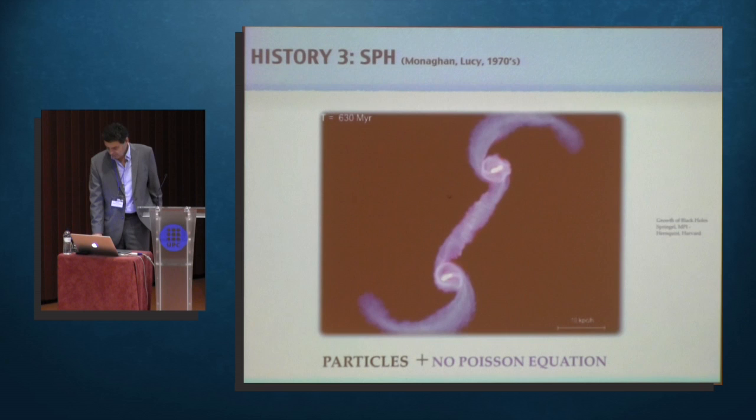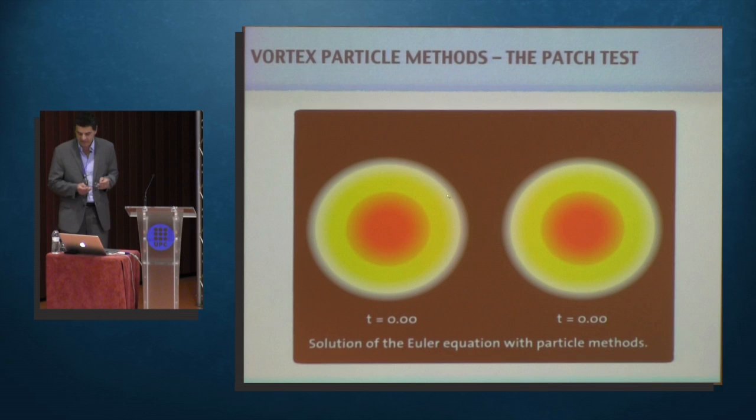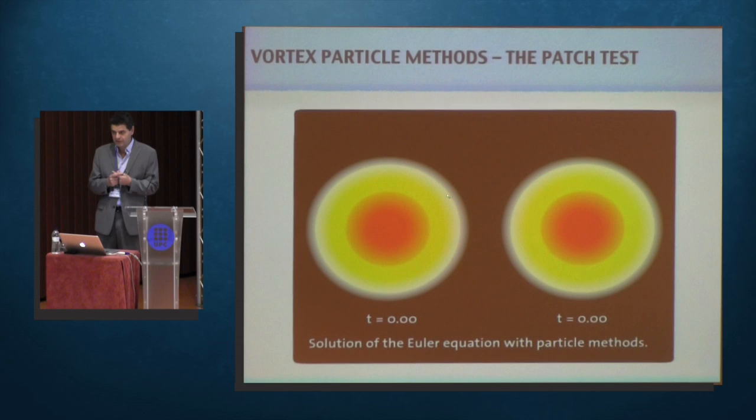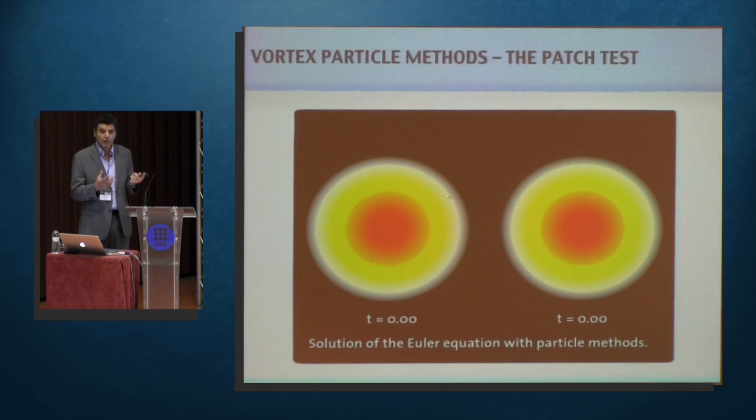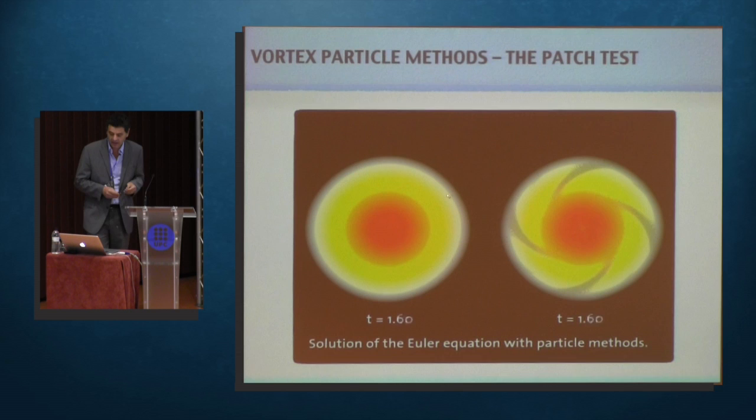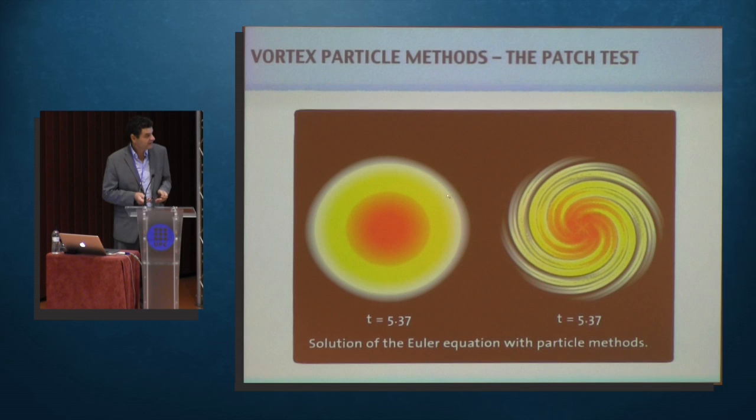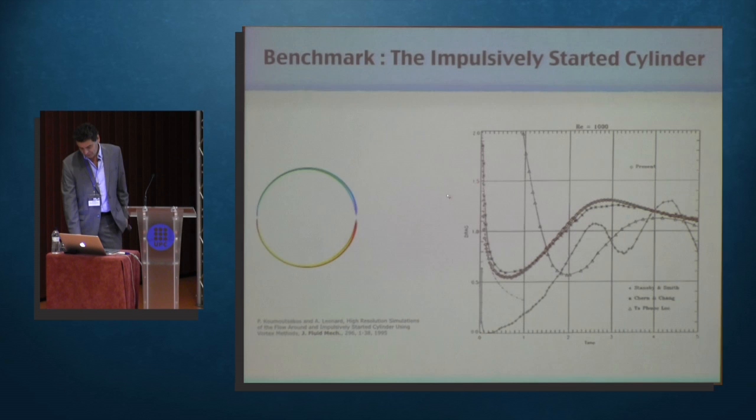You can do some simple tests to show that. Here's the simple test, which is a circular patch of vorticity. This is a solution of the Euler equations. What's nice about that is that it's an exact solution of the Euler equations. It's a very boring solution, because it says that if you start with a circular patch, you should remain with a circular patch of vorticity. Now, if you run it with particles, this is what you get. And what I usually say, this is the reason why particle methods are popular in astrophysics. You always get some kind of galaxy.